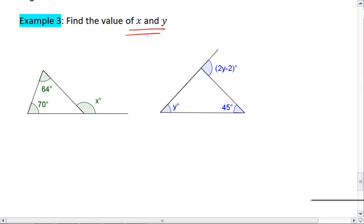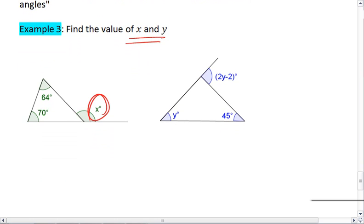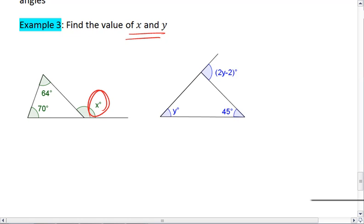So what this exterior angle theorem tells us is that our exterior angle, which in the green triangle case is x, is equal to the sum of the two non-adjacent interiors. The adjacent interior angle would be this angle here. So we now know that x must equal the sum of the other two angles, so 64 plus 70. So x equals 134.